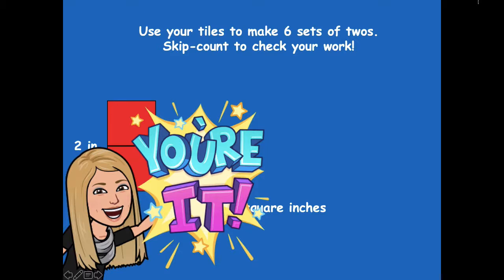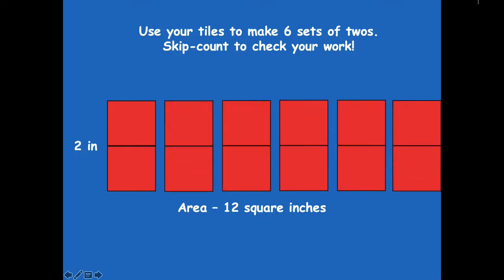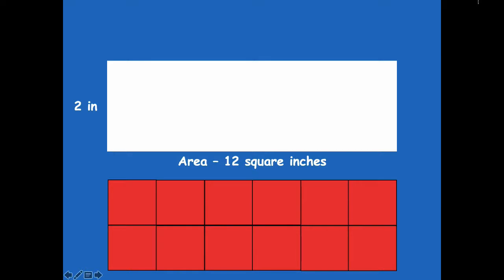Go ahead and pause the video and make six sets of two, then click play when you're ready for the next step. Here are my six sets of two — now push your tiles together to make a rectangle, so instead of having gaps push them all together so you have two rows of six. Here's what mine looks like when I push them together.